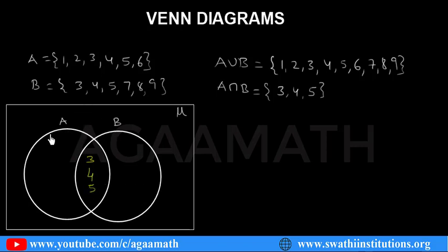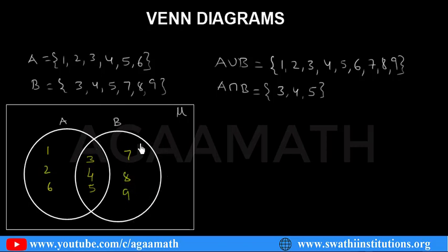Now we can see set A has 3, 4, 5 in the common region, and we write 1, 2, 6 in the remaining part of A. And B already has 3, 4, 5 completed, so we write 7, 8, 9 in the remaining part of B. A union B means 1, 2, 3, 4, 5, 6, 7, 8, 9 — the common region and both sides together. This is the way we write the elements which belong to the respective sets.